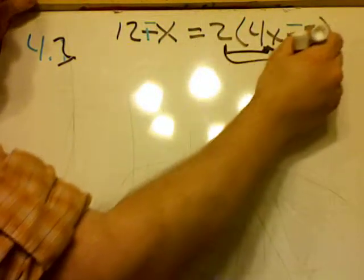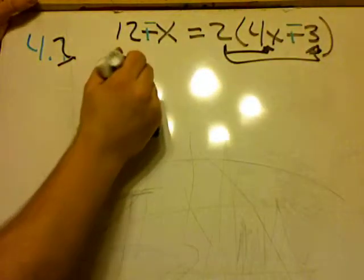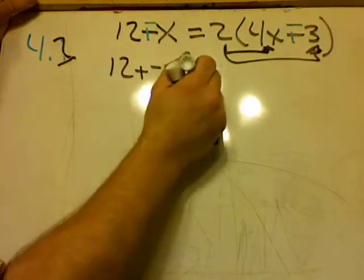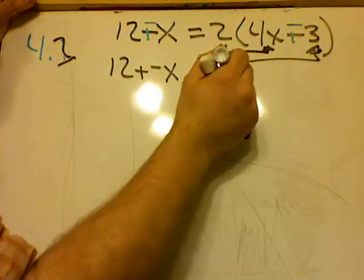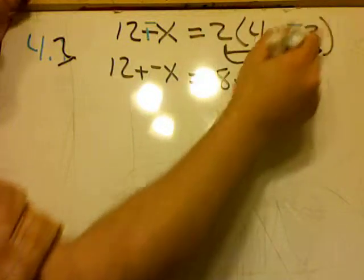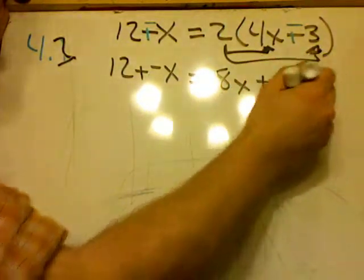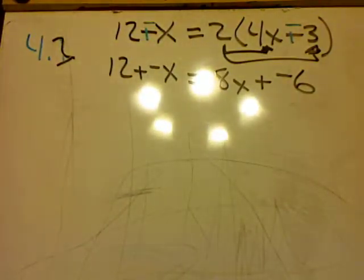I'm going to have to do some distribution here. So 2 times 4x is 8x plus negative 6. Now I want to get all the x's on one side of the equation, and everything else on the other side of the equation.